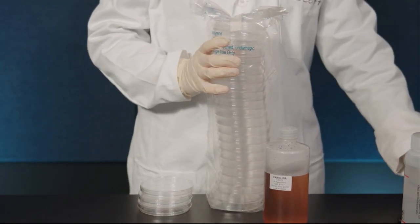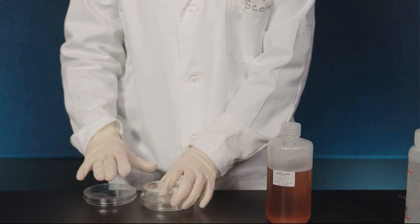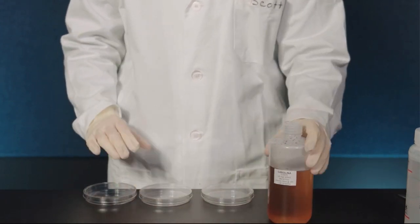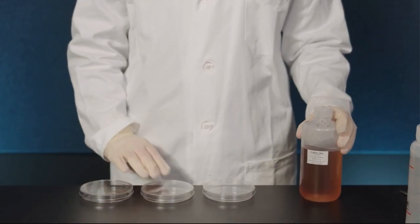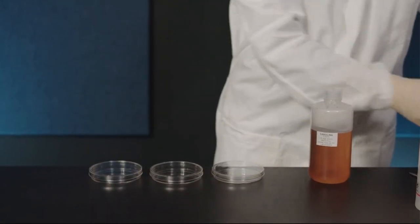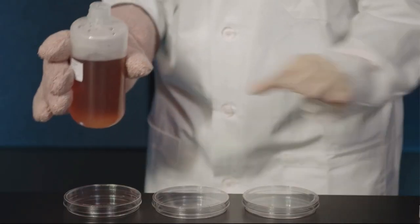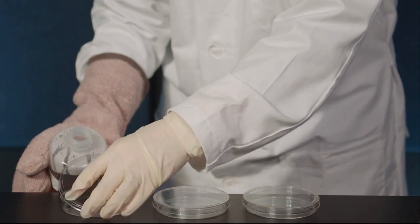Line the plates up along the edge of the bench. This makes the plates easier to pour. The plates shown here are about 10 centimeters in diameter. Pour about 20 to 25 milliliters of agar media into each plate, as shown here.